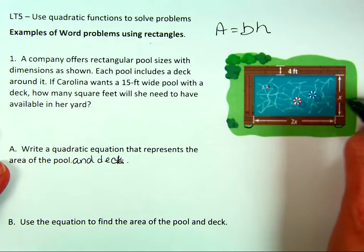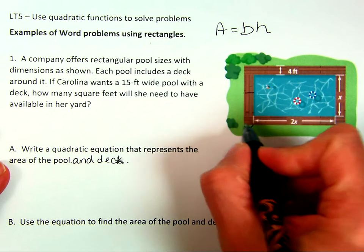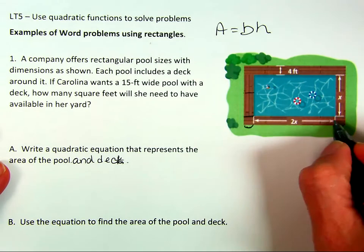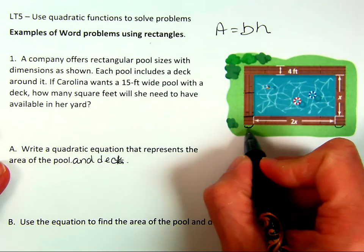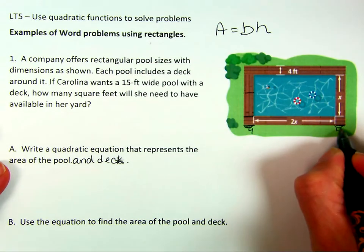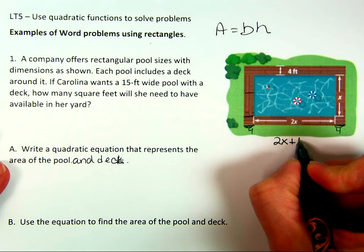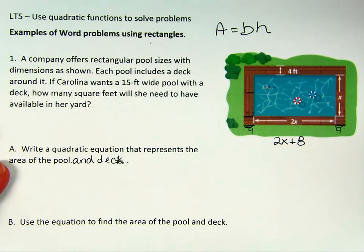All along this deck, it's the same width. So if it says it's 4 here, that means it's 4 here, it's also 4 here, 4 here. So we know that this little distance and this little distance is 4, and 4 plus 4 is 8. So that means this whole side with the deck included is going to be 2x plus 4 plus 4, which is 2x plus 8.